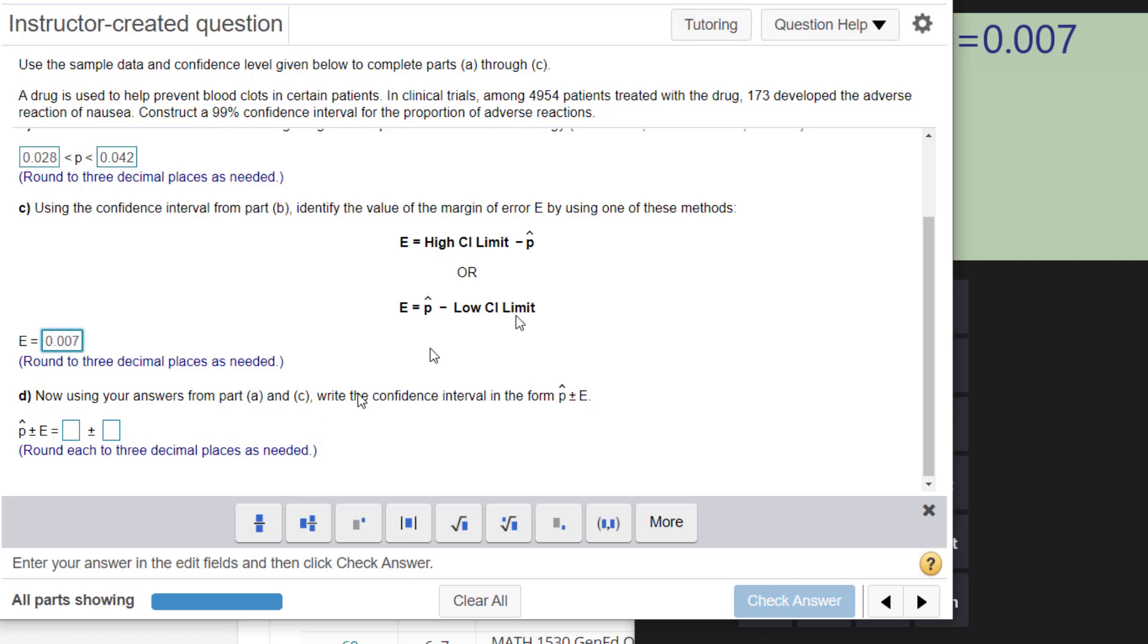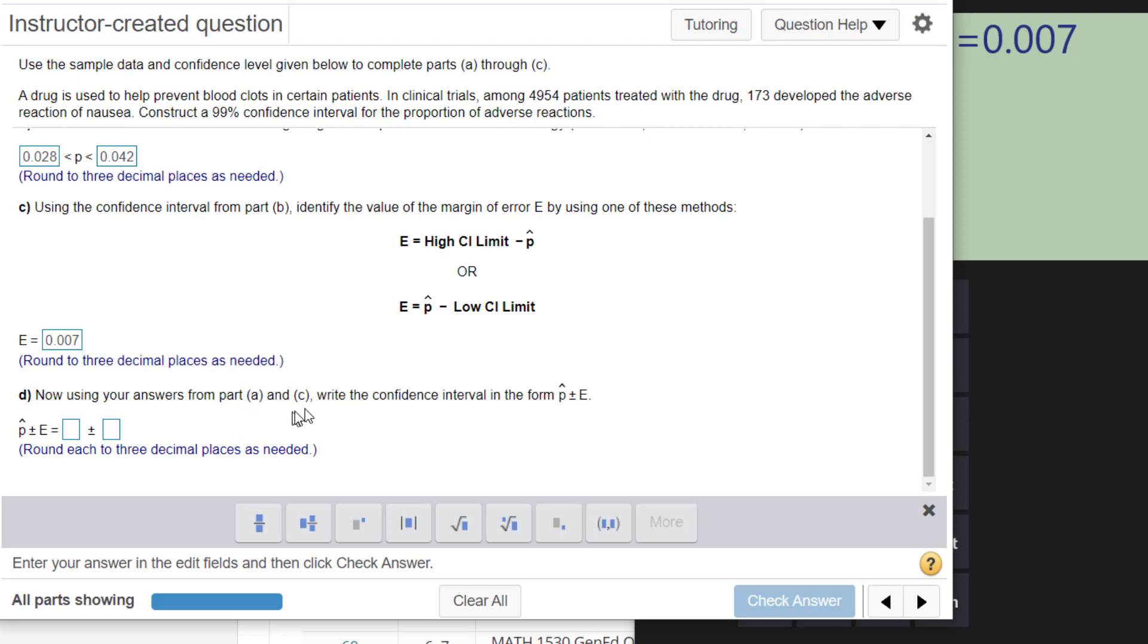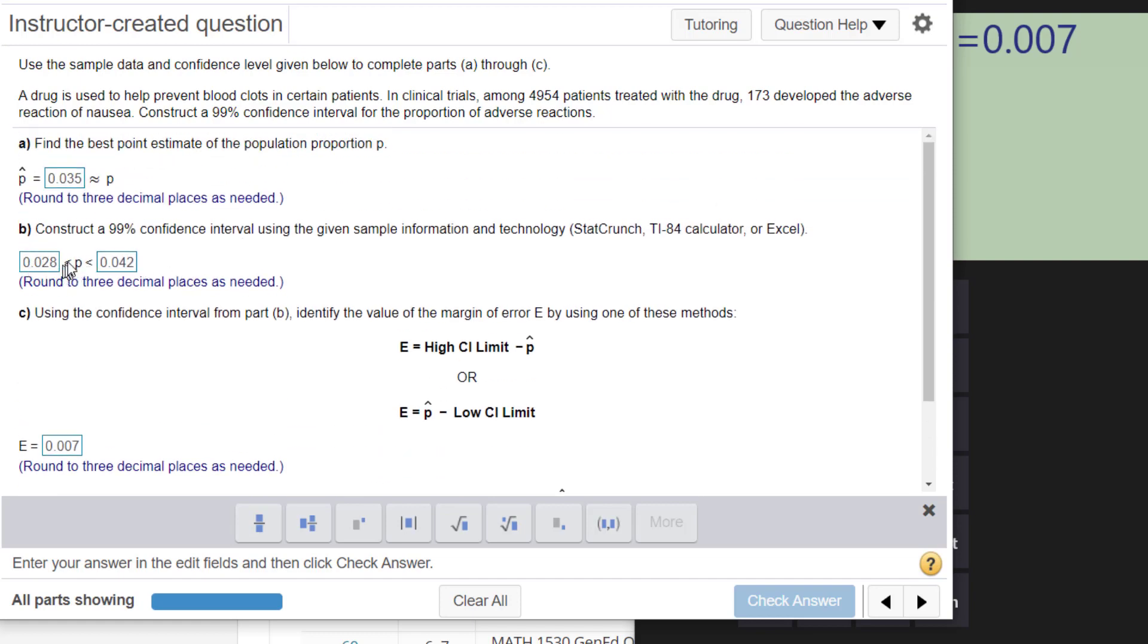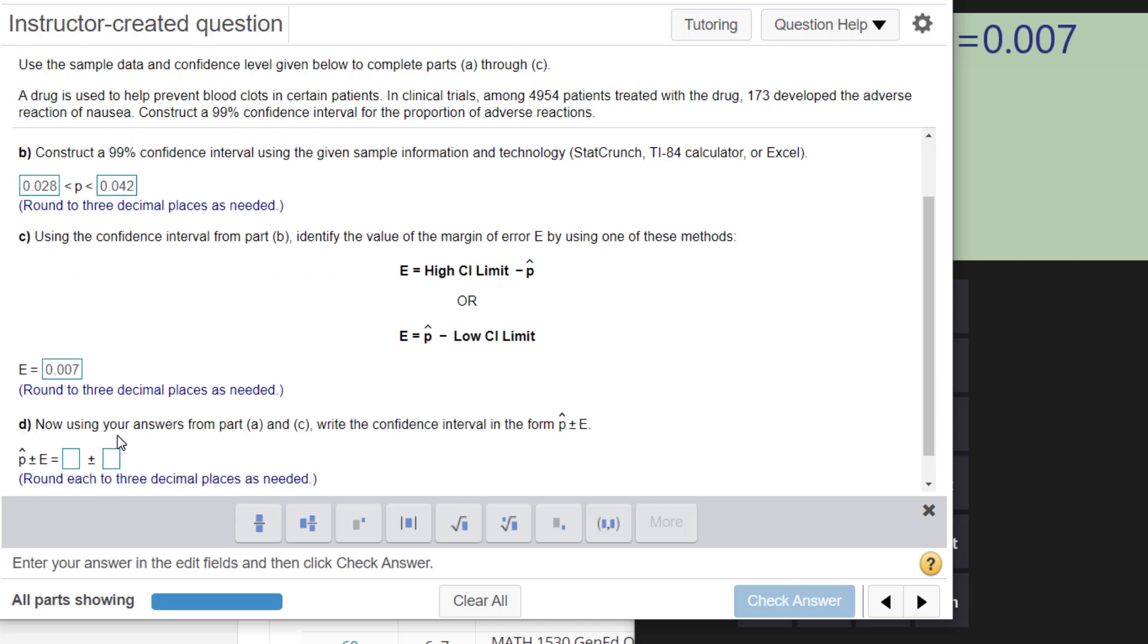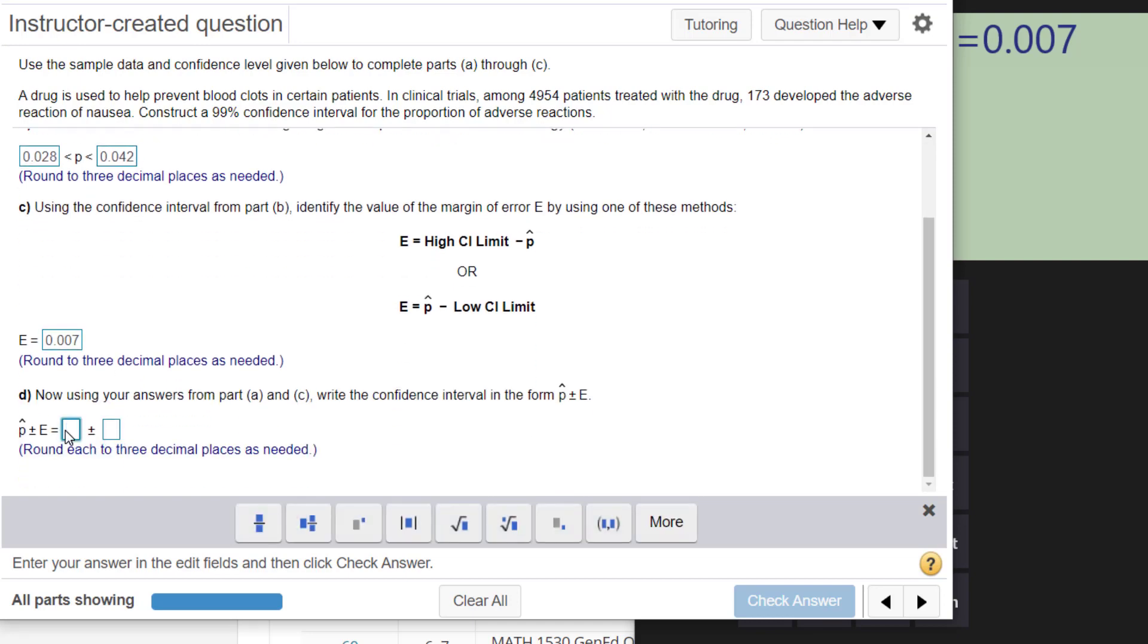You can find it, like I said, a couple different ways. And then once you get that right there, we can actually put our answer from part A and part C into P hat plus or minus E form. It's just another way to write that original interval, the interval right here in part B. We can now write it as 0.035, so the P hat, the best point, the point estimate. That's the middle of the interval. And then plus or minus 0.007, the margin of error.